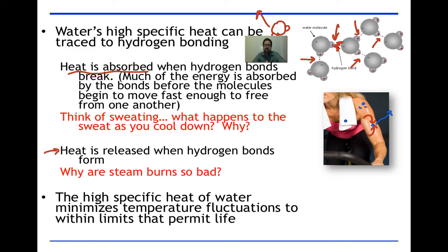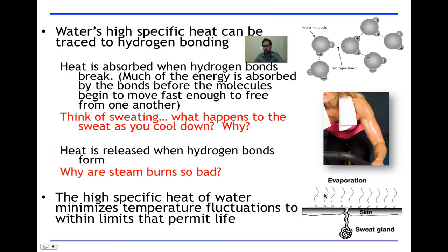Overall, the high specific heat of water minimizes temperature fluctuations within limits that permit life. Temperature must remain relatively stable for the organism to be safe. Here's another view of evaporation showing a sweat gland secreting sweat. The heat from blood vessels goes into these liquid droplets, thus reducing the temperature of the living organism. The water droplets change into H2O gas particles and float away. That's evaporative cooling.